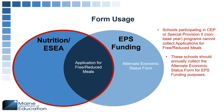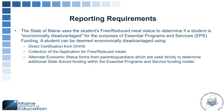Someone asked: if the nutrition department does not share the direct certification list, how are we able to get that information? Direct certification is automatically overridden in NEO. You can look at aggregate counts of students on the direct certification list, but those students will be automatically identified as economically disadvantaged for EPS purposes in NEO. You don't have to check the direct cert list — it automatically gets put into our system.